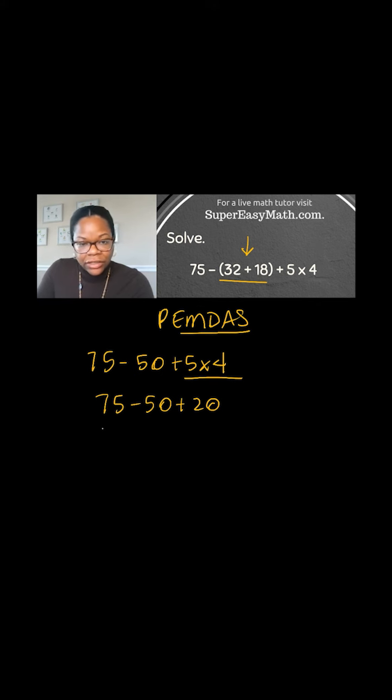What about addition and subtraction? Yes, I need to solve it from left to right. So 75 minus 50 is 25 plus 20. So that is 45.